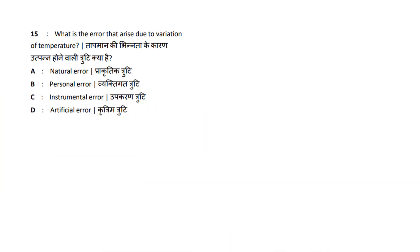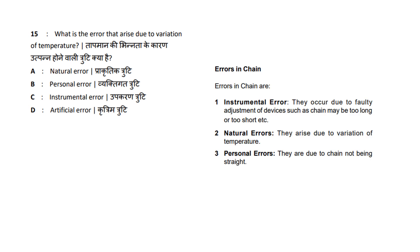Next question: What is the error that arises due to variation of temperature? We will discuss the main types of errors in chain surveying: instrumental errors, natural errors, and personal errors. Temperature variation is a natural error. If the chain is not straight or not pulled tight, that is a personal error. The error due to temperature variation is a natural error. Answer: Option A — Natural error.